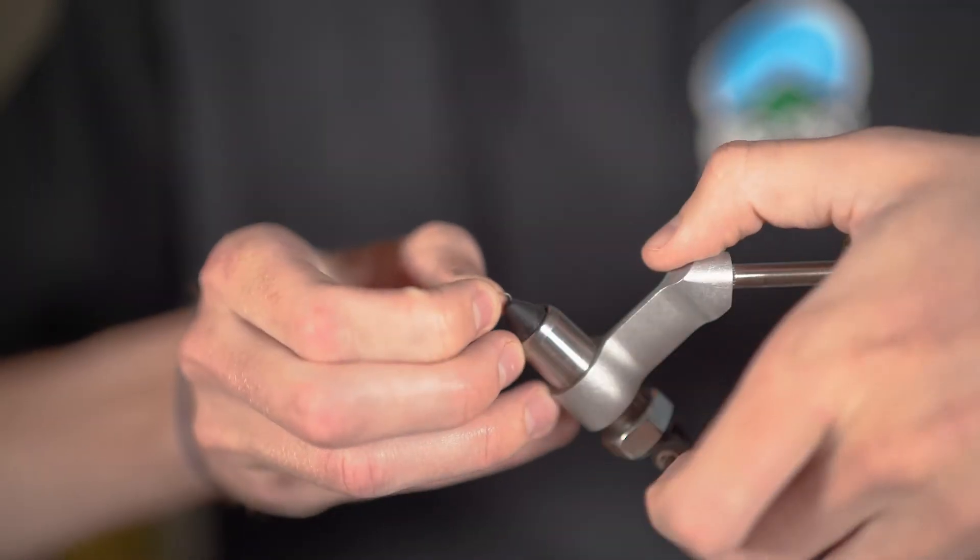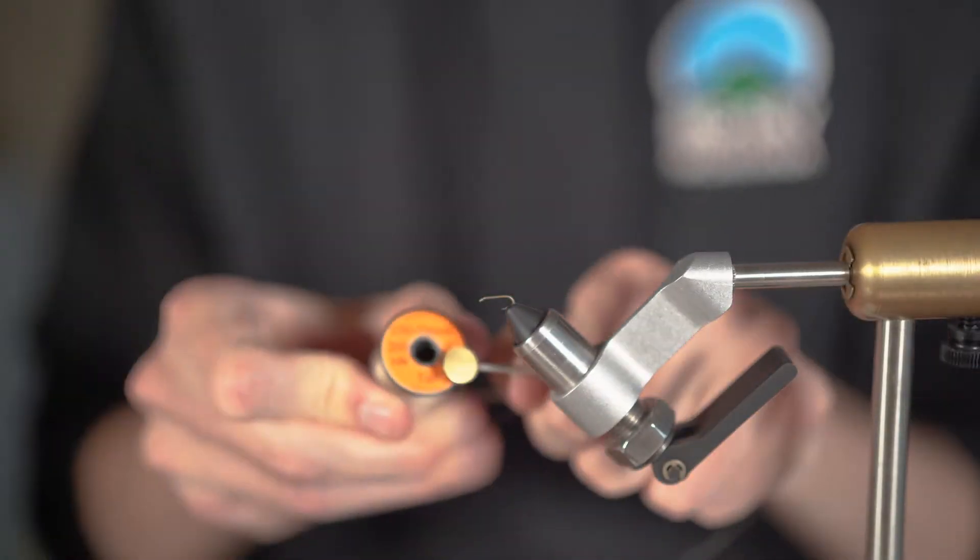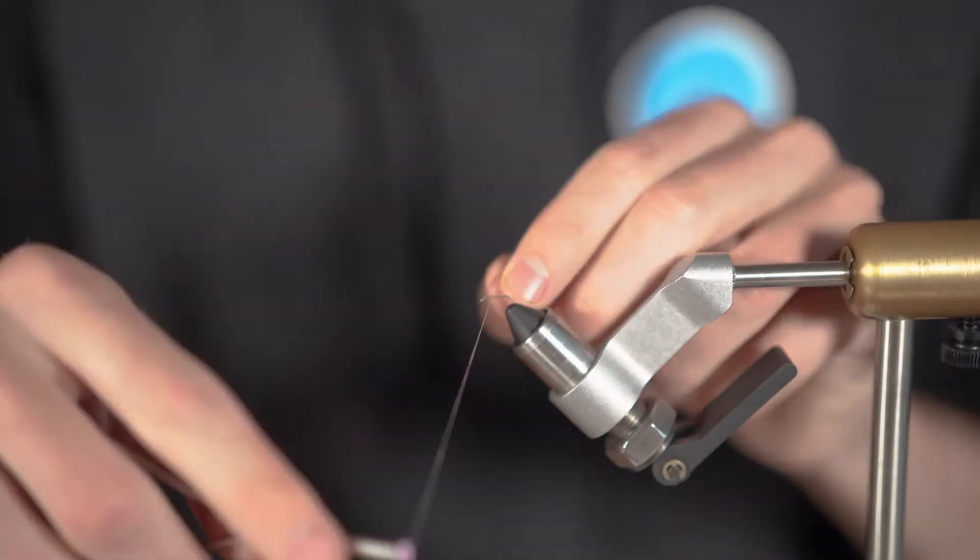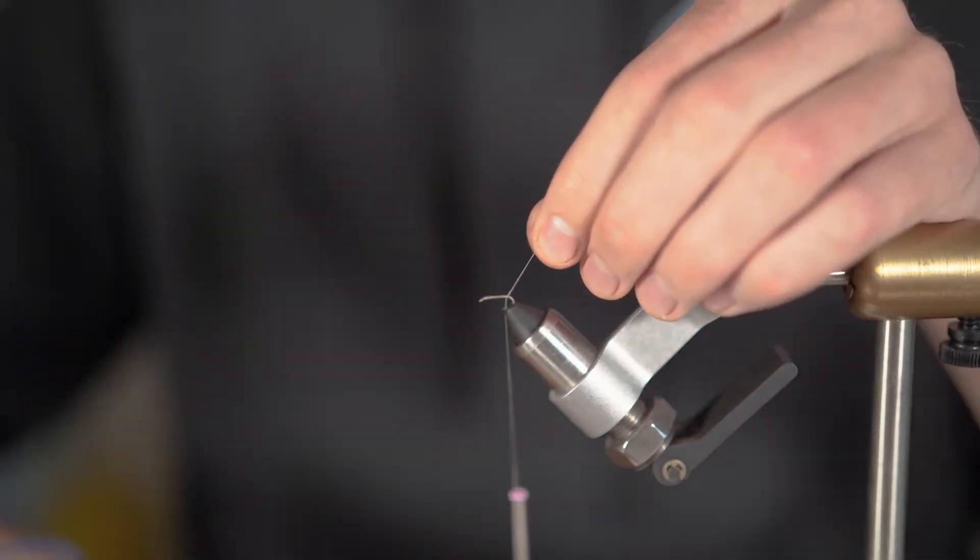Alright, first things first, clamp that tiny hook firmly into the vise and grab out that thin tan thread. Put it onto your bobbin and wrap from the eye to the bend of the hook.